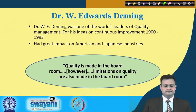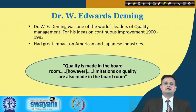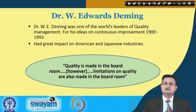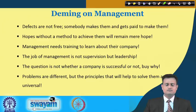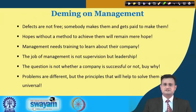Deming strongly believed that quality is made in the boardroom — however, limitations on quality are also made in the boardroom. He advocated that the failure and success of quality is decided the moment policy and quality ideology are decided. His management principles are quite generic and many times appreciated as general management principles, but when applied for quality improvement, drastic improvements and results are realized.